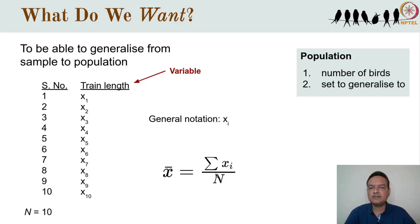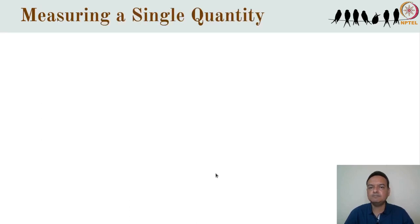So with all this in mind, let's start discussing our first possible task, which is to measure a single quantity. A common task is estimating a single specific quantity of interest — whether that's the sex ratio of Great Indian Bustards in Desert National Park, or the density of peafowl in a forest, or the average mass of house crows in a city, or the average time spent by magpie robins singing during the breeding season. Through our sample, we are estimating what the true quantity might be for the population as a whole.